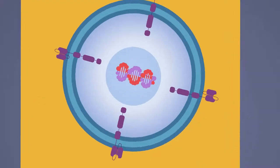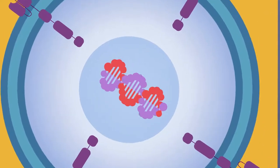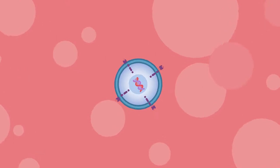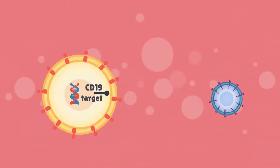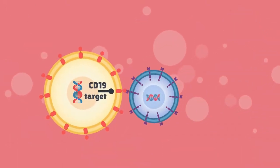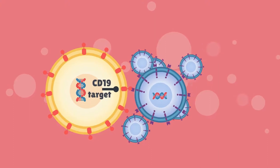After CAR T-cells are infused into the patient they act as a living drug against cancer cells. When they come into contact with their specific CD19 target antigen on the cancer cell, CAR T-cells bind to it and become activated, then proceed to proliferate and become cytotoxic.